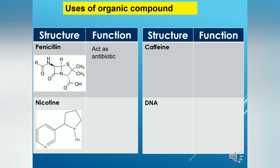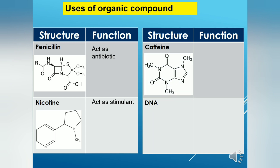Nicotine — why do people like to smoke? This is due to nicotine, which releases a chemical called dopamine that can help ease tension and make people feel good temporarily. However, nicotine is not healthy because it can cause addiction. Caffeine is found in coffee and tea and can help stimulate the central nervous system in order to keep people awake and active.